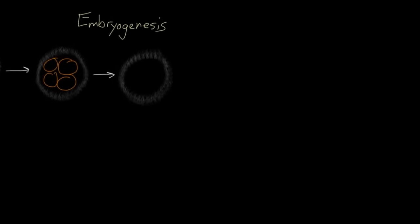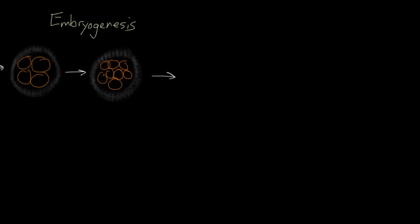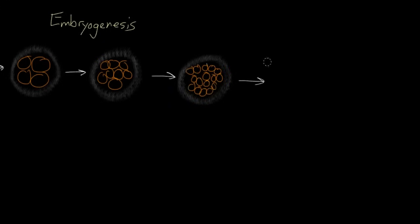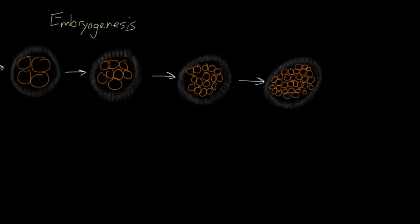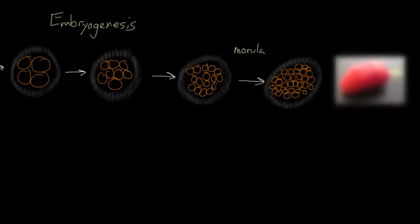You've gone from 16 cells to 32 cells. At this point, you look different enough that somebody decides to give you a new name. So instead of being called a zygote, you're called a morula. Morula is just a Greek word that means mulberry, and you actually do look a little bit like a mulberry. Here's a picture of a mulberry from my front yard to prove it — this one's not quite ripe.